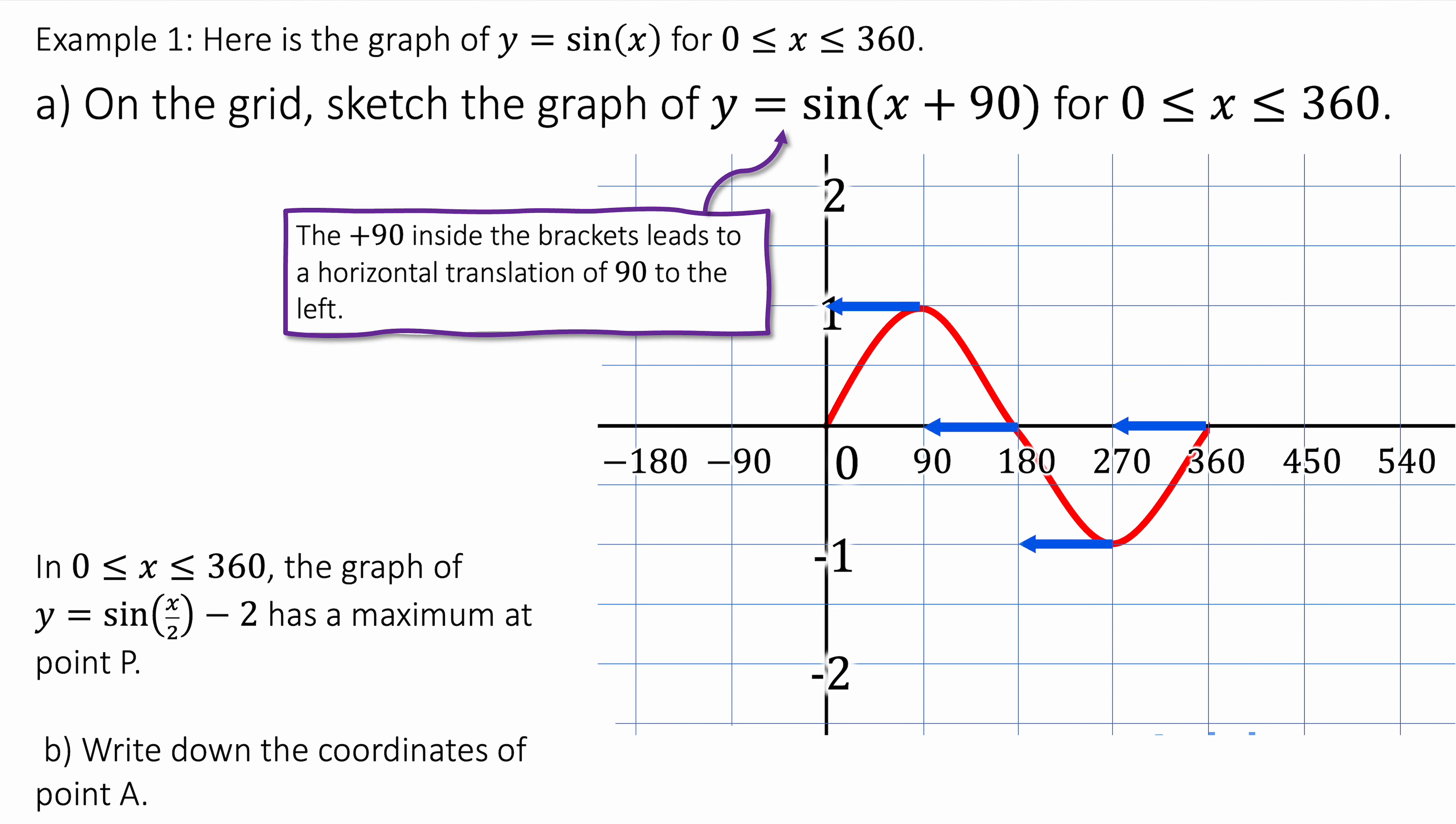So for this one we are adding 90 inside the brackets and that means we're going to shift the entire graph to the left by 90 degrees. And it will look like this. So that blue curve is exactly what we're looking for. Therefore it is shifting the curve by 90 degrees to the left.